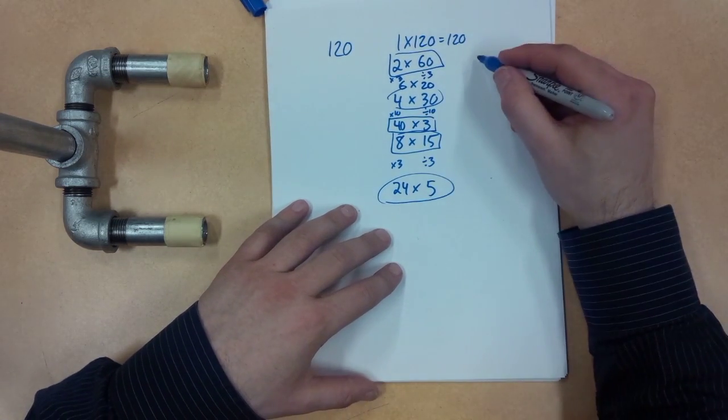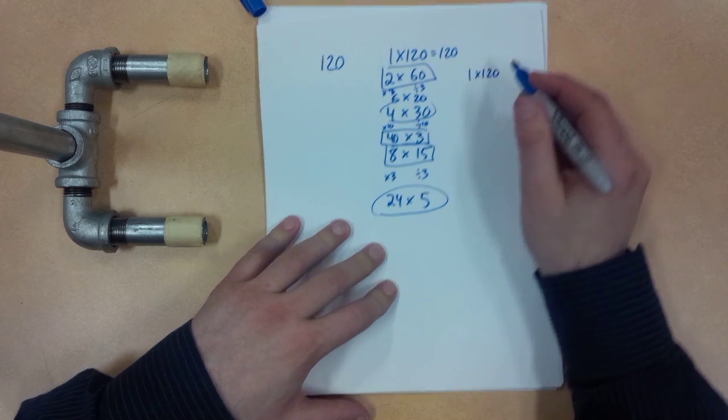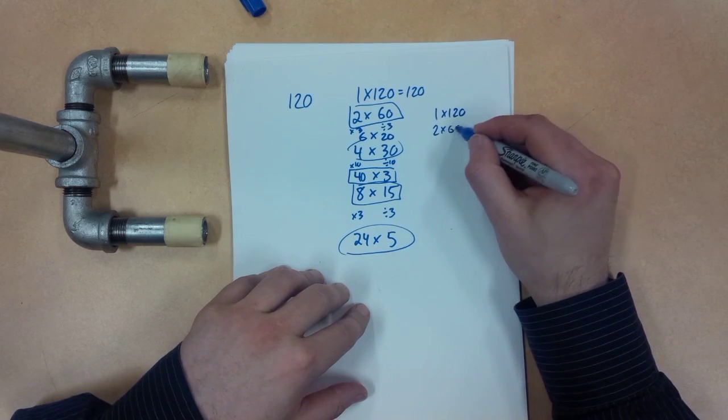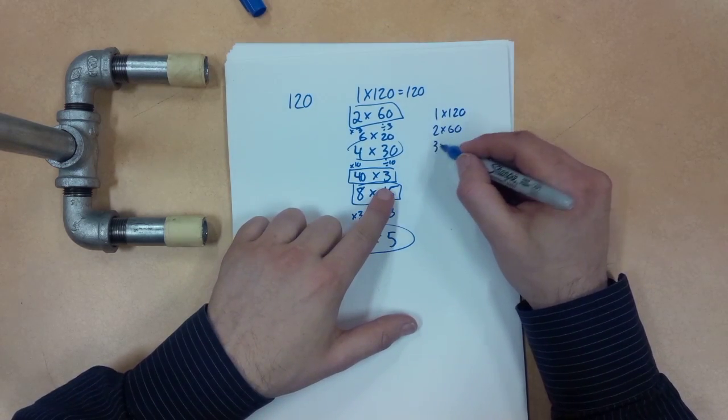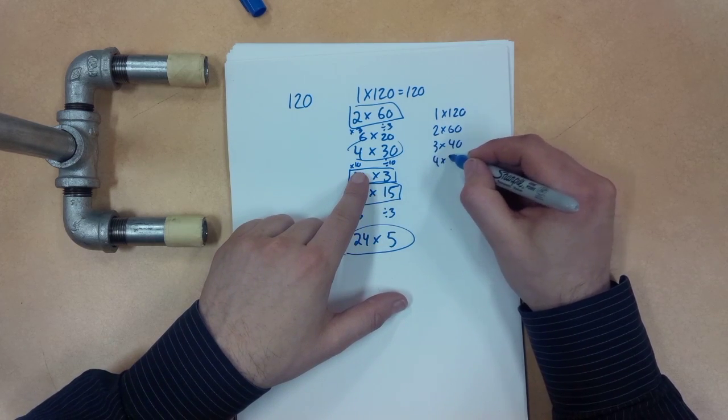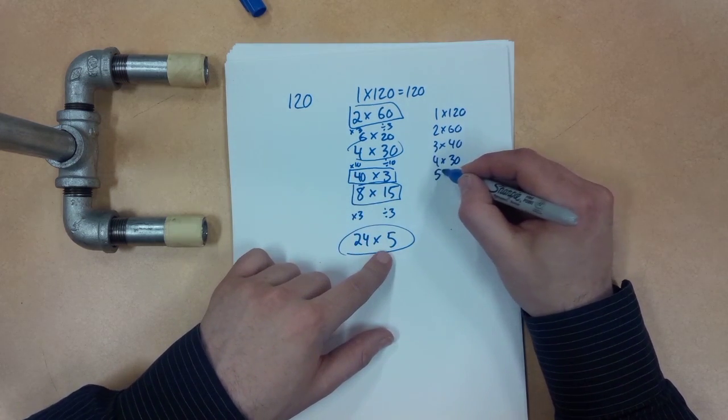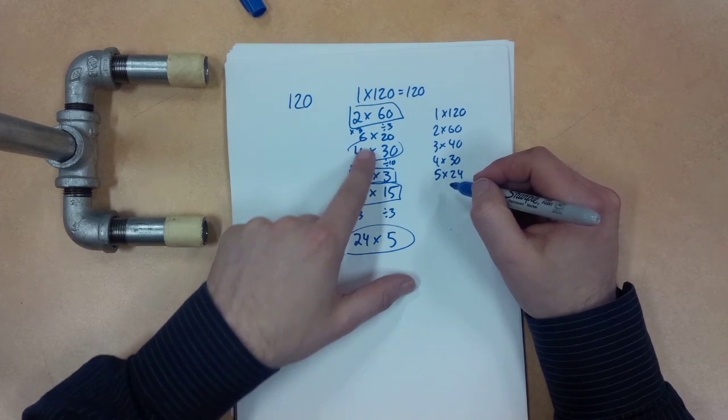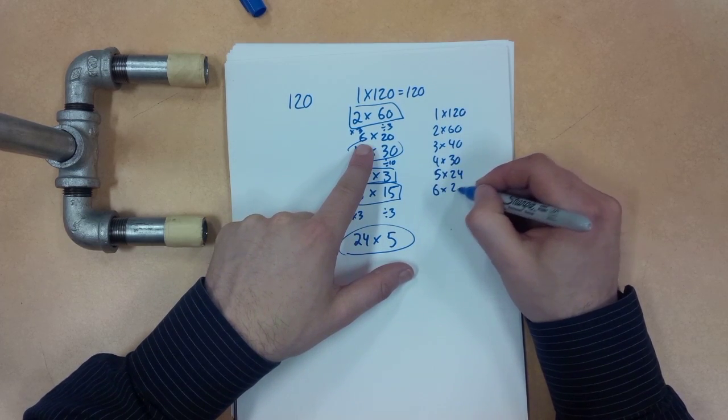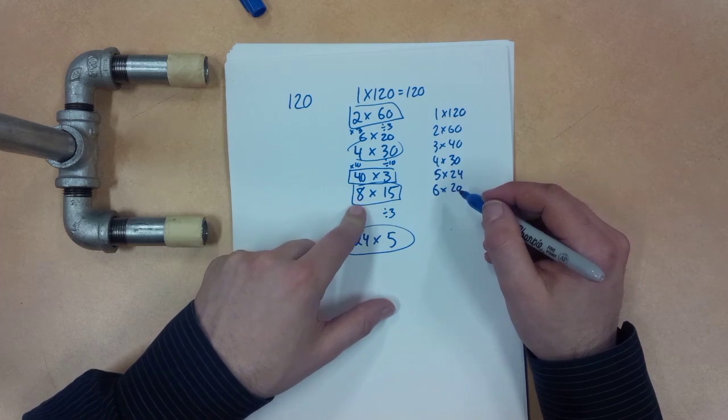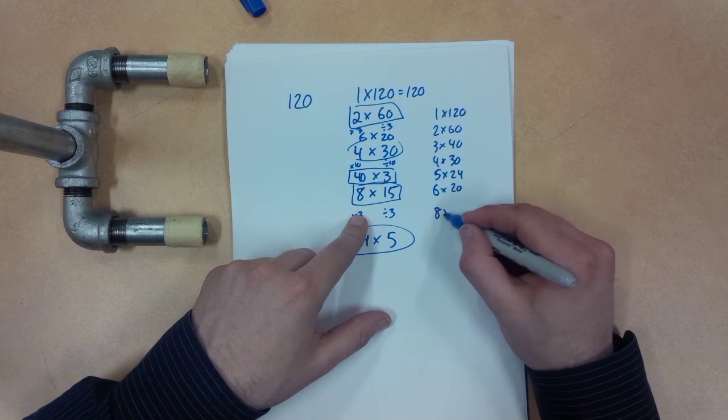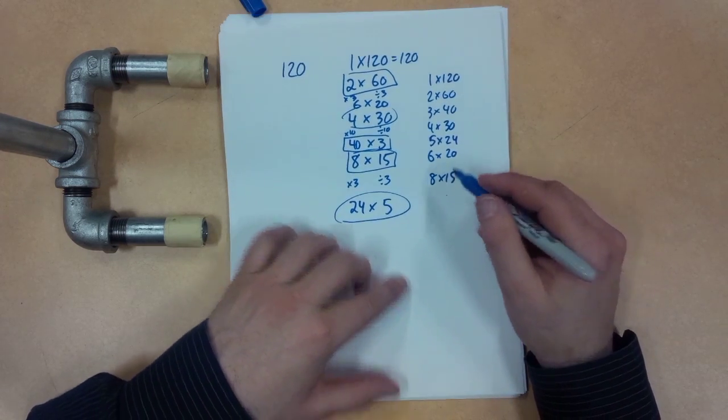Okay, I'm going to just kind of redo my list here. I've got 1 times 120. I've got 2 times 60. I've got 3 times 40. I've got 4 times 30. I've got 5 times 24. I've got 6 times 20. Lots of factors. And then I've got 8 times 15. Okay, so that's pretty good so far.